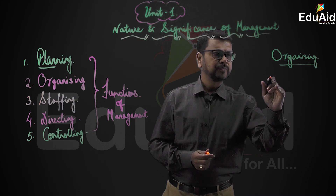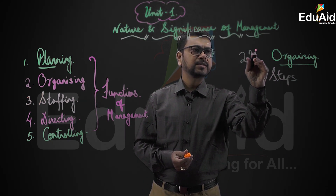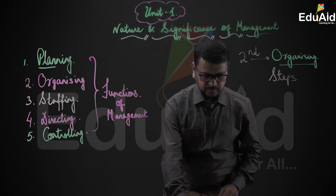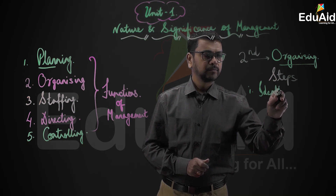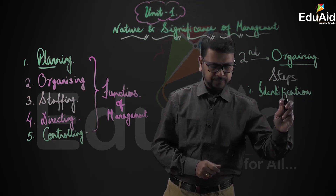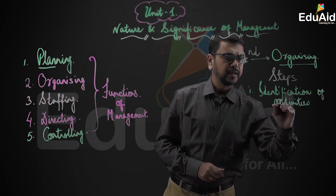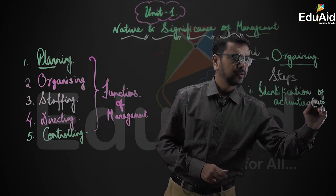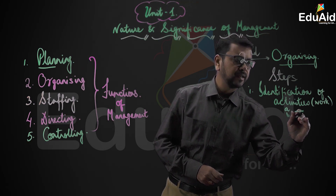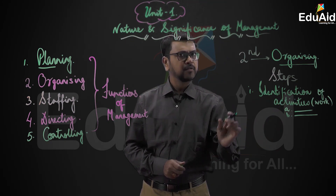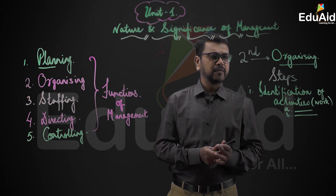Let's begin by understanding the steps of organizing, which is the second function of management. Step number one: identification of activities — the various work or tasks that need to be done, maybe activity A, activity B, and so on. Write them down in detail. Accordingly you can decide on the course of action. Identification of activities is the first step.